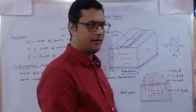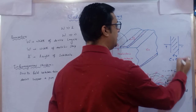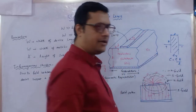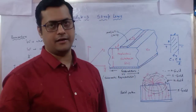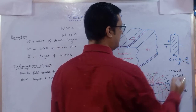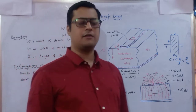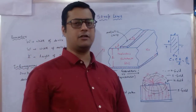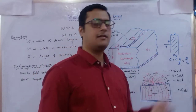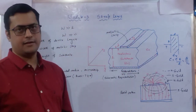Capacitance is identified as epsilon times A divided by d, where d is the spacing between the plates and A is the cross-section. Also, C equals Q over V₀, where V₀ is the applied potential and Q is the distributed charge on the plate. These relations will be used for the microstrip line.